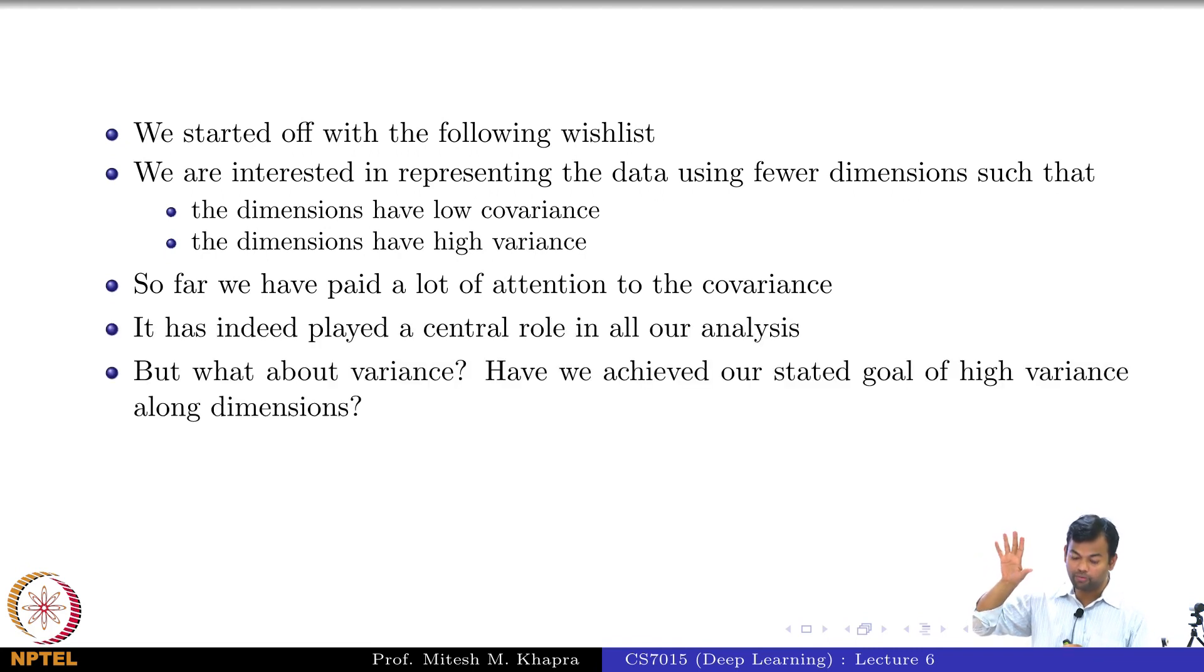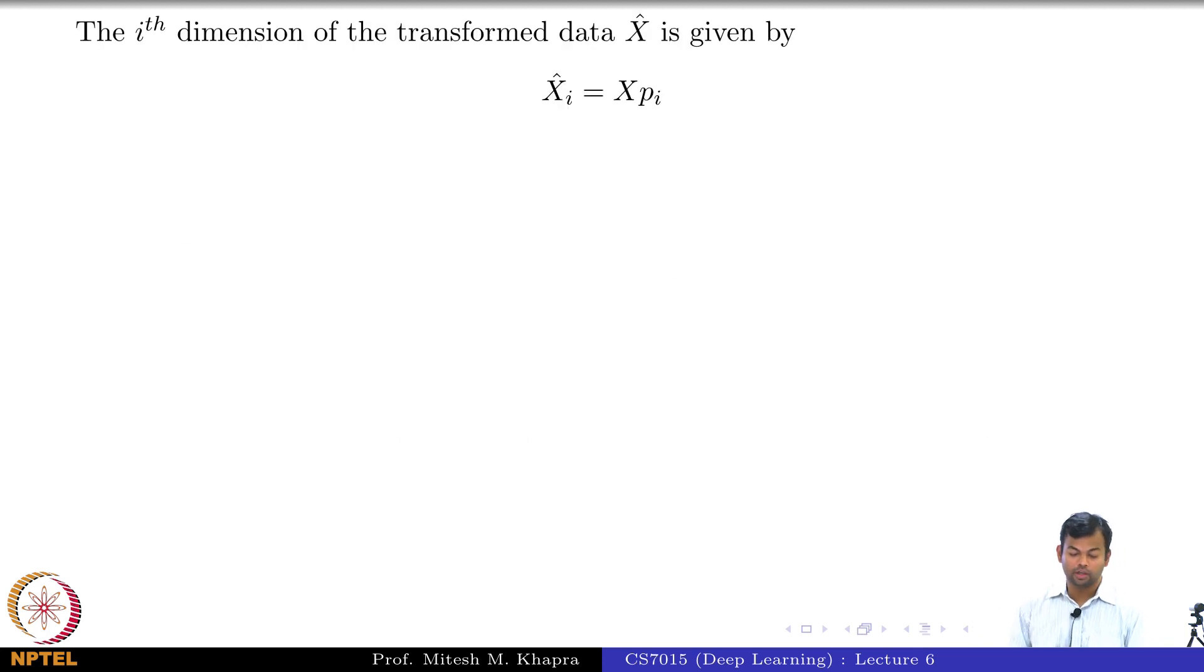But what about variance? Have we achieved the goal with respect to high variance? Let us see. Now, what is the i-th dimension of the transformed data? It is this: you take your data and project it onto the i-th dimension. So X hat is equal to X into p_i.